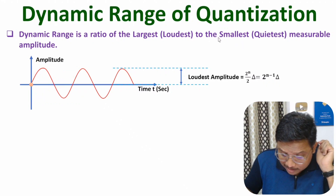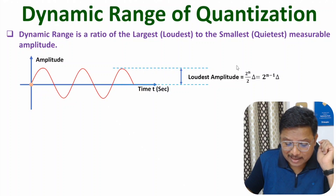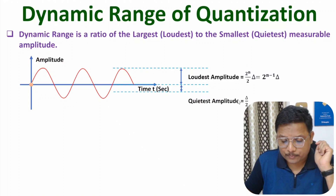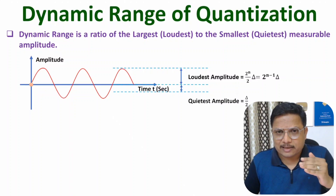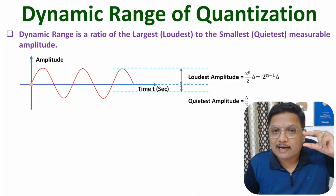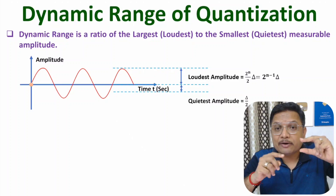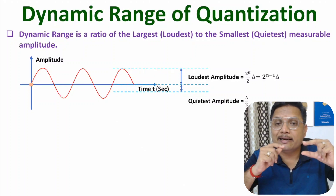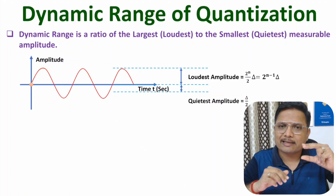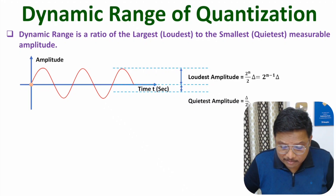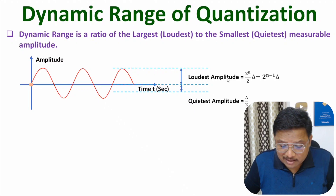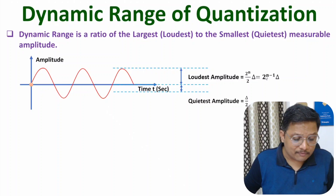If you talk about the smallest measurable amplitude, that has to be δ/2. The reason is: if you want to measure a single step, the amplitude should be at least greater than δ/2 — then one can consider we have received one step. So the quietest measurable amplitude is δ/2, and the loudest measurable amplitude is 2^(n-1) × δ.